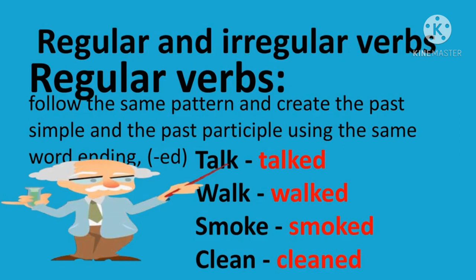When we talk about past verbs, we have to discuss regular and irregular verbs. Regular verbs follow the same pattern and create the past simple and past participle using the same word ending -ed. For example: talk becomes talked, walk becomes walked, smoke becomes smoked, and clean becomes cleaned. You can see we have added -ed to the verb.